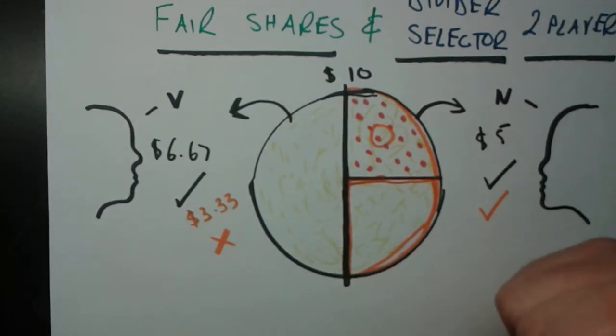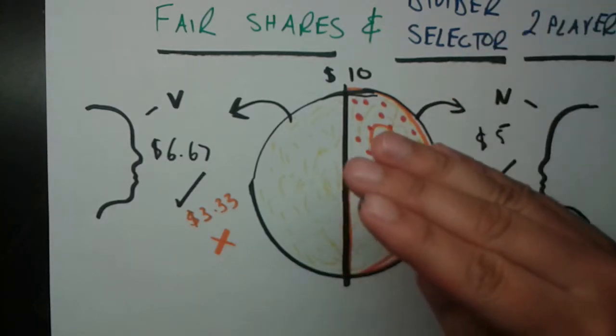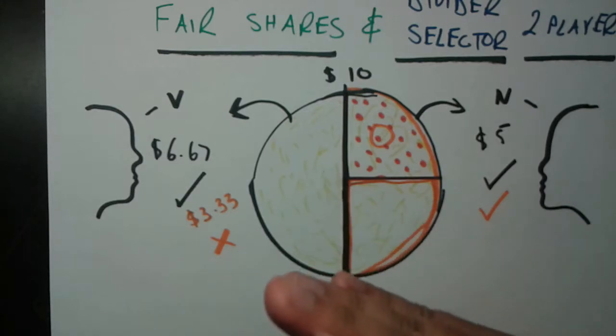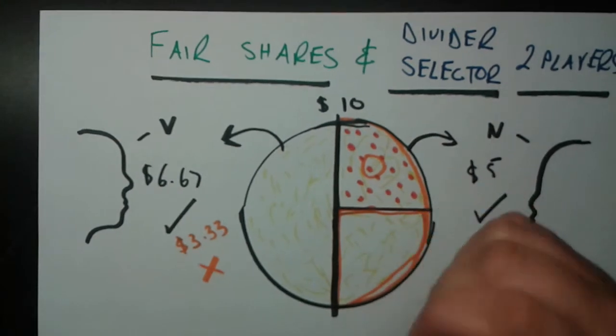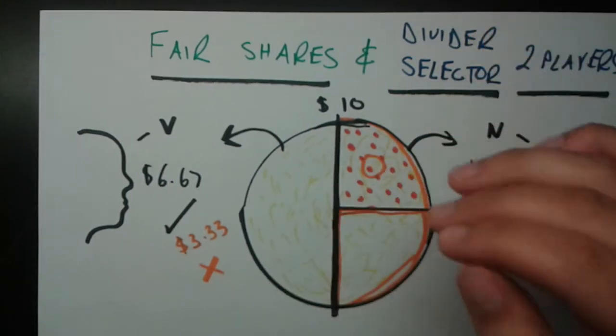That is not a good way to divide this pizza, because not both parties are getting a fair share. Now that we know what a fair share is, we can talk about the divider-selector method. This method is really simple, very straightforward. One person is the divider, so he cuts the pizza into two parts, and the other person chooses which part he wants. That's simple enough on the surface, but let's think about what's going through each person's mind as they cut.